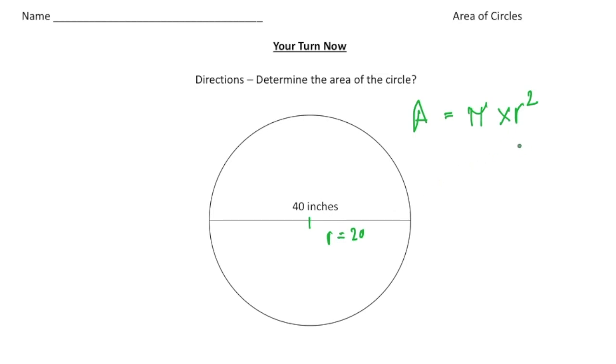And we know our radius is 20. So I'm going to fill in the 20 for the r. So it's going to be 20 squared times pi, which is 3.14, equals the area.